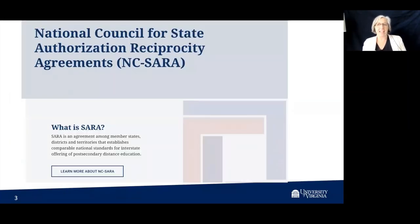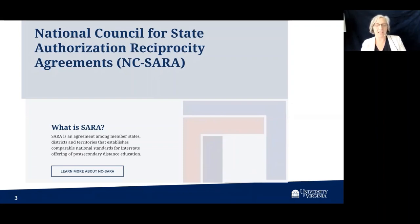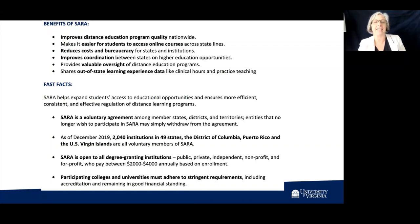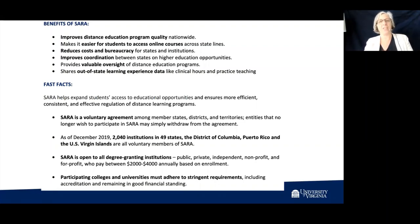I'm going to talk about NC SARA, specifically the C-RAC compliance. NC SARA is a reciprocity agreement that has taken hold over the last three or four years. There are institutions in every state except California that are members of NC SARA, and you get to make your provost sign an agreement every year saying yes, we're going to comply with NC SARA requirements to be part of the reciprocity agreement. So in getting your provost to sign off on that, there's rationale of why NC SARA and what the C-RAC guidelines are.